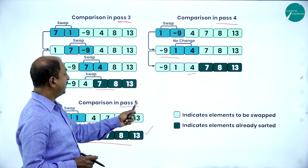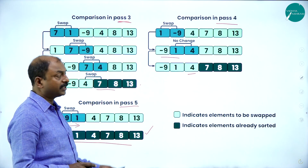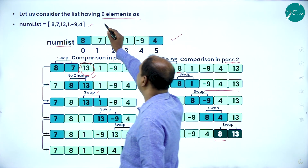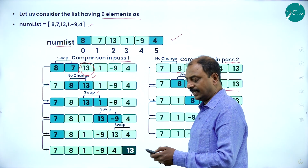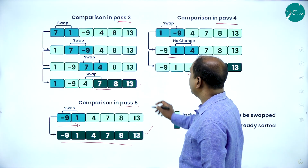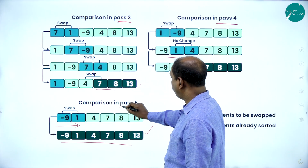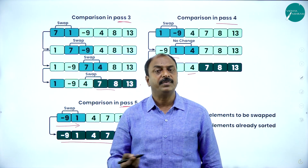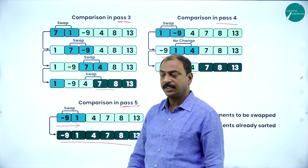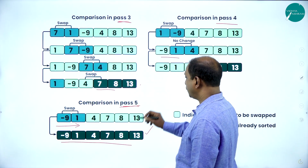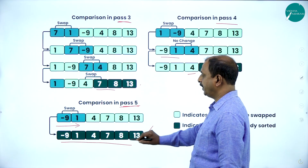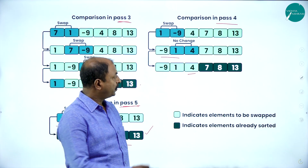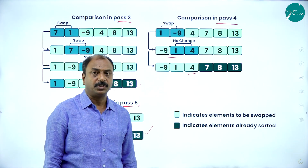If you observe, the length of the list or size of the list is 6. There are 6 elements, so n is 6. Bubble sort takes n minus 1, that is 6 minus 1 equals 5 iterations or 5 passes. At the end of 5 passes the elements are arranged in a definite order. In this example, they are arranged in ascending order. This is the technique or process of bubble sort.